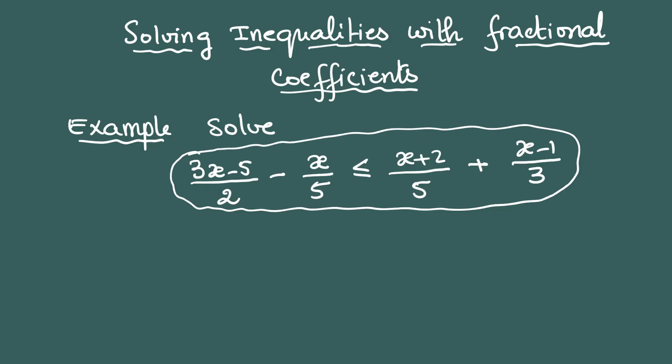Here is an example which I would like to solve. The idea here is to multiply all the terms of this inequality by a number that I can divide by 2, by 5, and by 3.